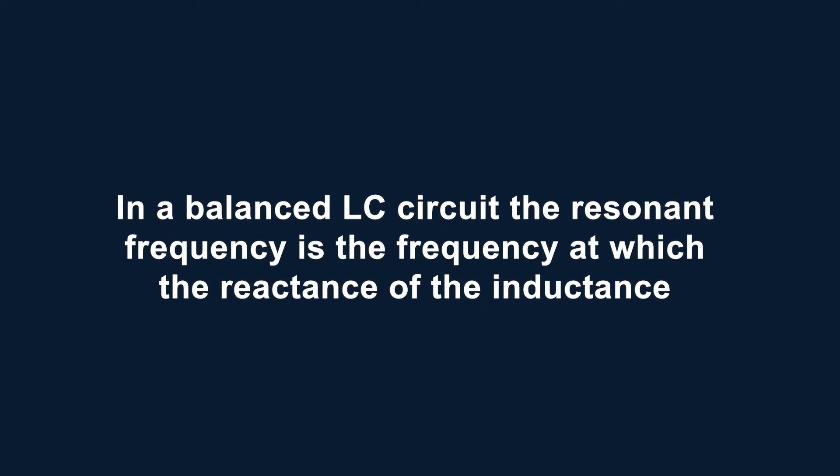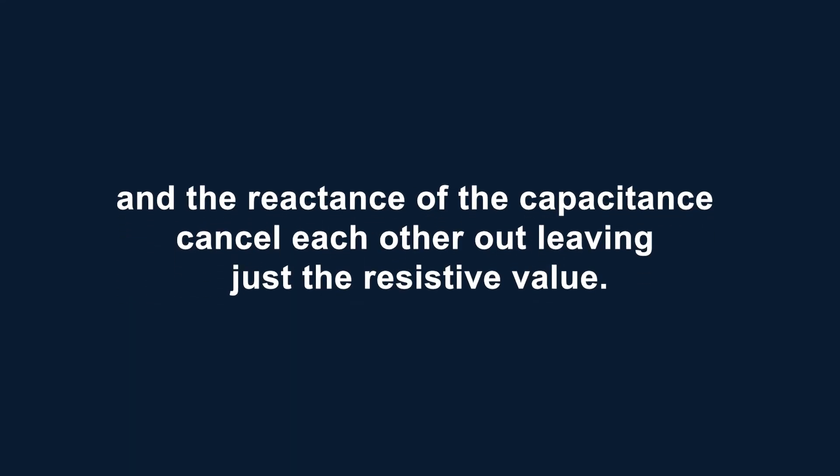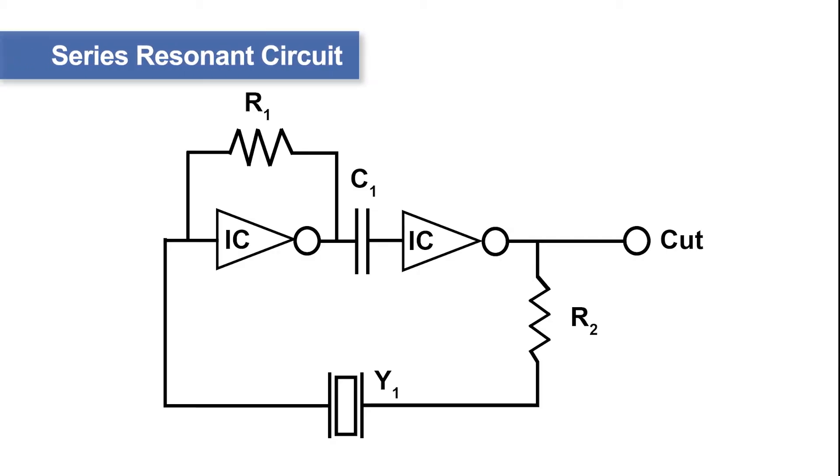In a balanced LC circuit, the resonant frequency is the frequency at which the reactance of the inductance and the reactance of the capacitance cancel each other out, leaving just the resistive value. In this illustration, we can see a series resonant circuit.